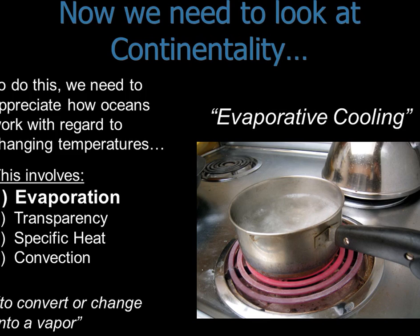Now we can talk about continentality. If you live close to an ocean, you have low continentality; if you live far from an ocean, you have high continentality. Living closer to an ocean means more moderate temperatures — not as hot, not as cold. Far from an ocean, you tend to get hotter in summer and colder in winter. Living next to a large body of water moderates your temperature, for four reasons.